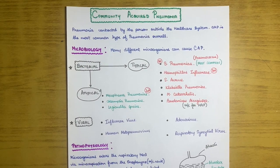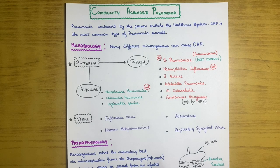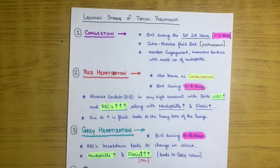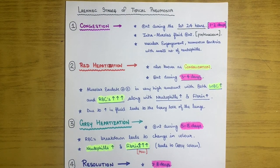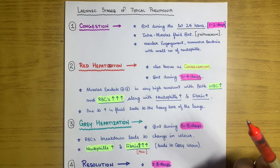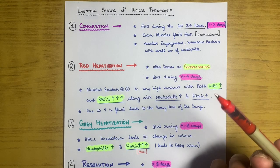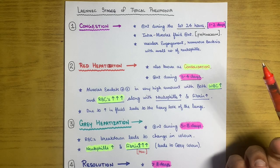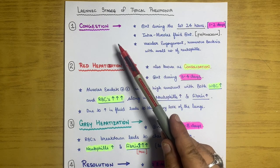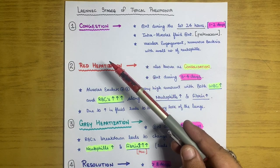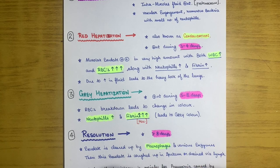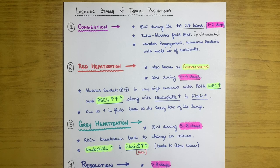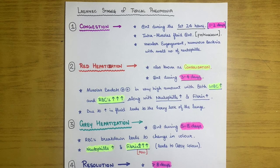A very important topic in community acquired pneumonia pathophysiology is the Laennec stages of typical pneumonia. There are four stages: congestion, red hepatization, gray hepatization, and resolution. These stages describe how the body reacts after a pathogen enters the lungs, step by step.